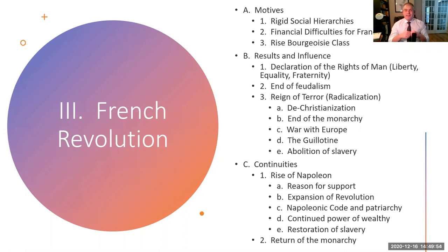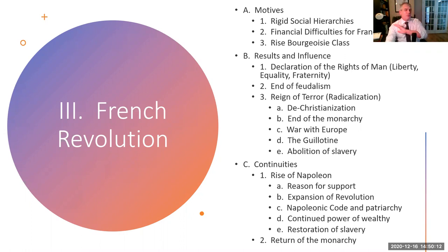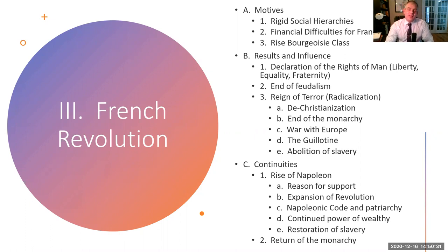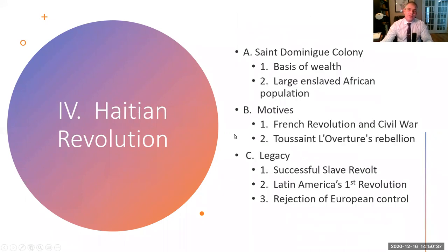After Napoleon goes away, the French return to a monarchy — but now the monarchy is not as powerful as it used to be. At the end, they end up back with the king, but the king is a little weaker. The social classes have gone away, feudalism has come to an end, but owning property means you have more importance in the society. We see some continuities and some changes — and that's what I want you to appreciate about all these revolutions.